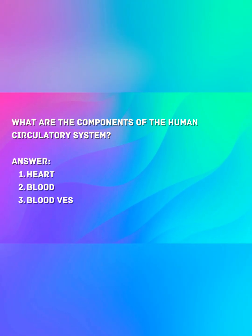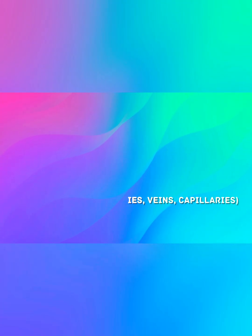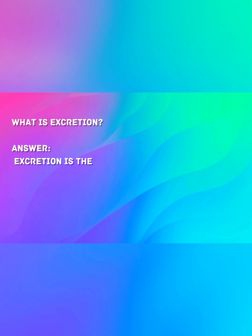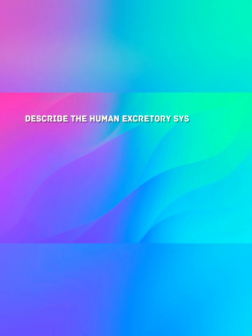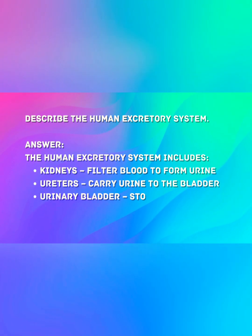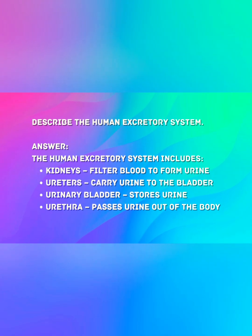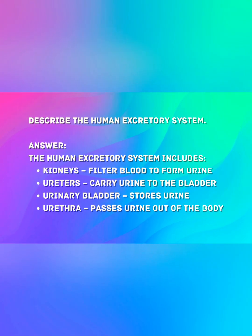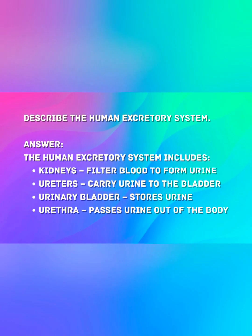What are the components of the human circulatory system? Heart, blood, blood vessels — arteries, veins, and capillaries. What is excretion? Excretion is the process by which metabolic waste products are removed from the body. The human excretory system includes kidneys, which filter blood to form urine; ureters, which carry urine to the bladder; the urinary bladder, which stores urine; and the urethra, which passes urine out of the body.